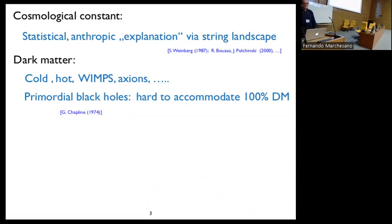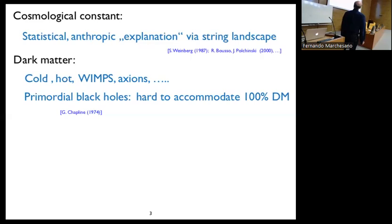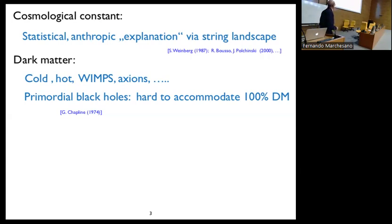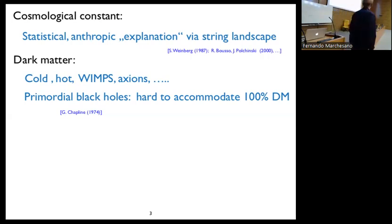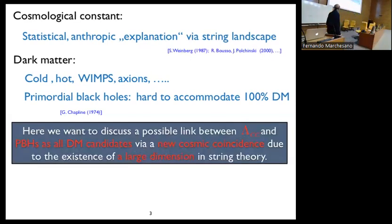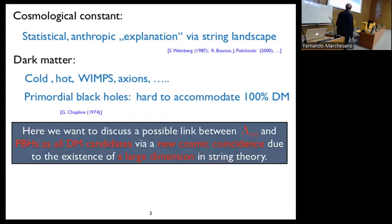For several years, people thought that a good explanation for the cosmological constant is a statistical anthropic explanation via the string landscape. And this might be the case for dark matter too — there are many scenarios like cold dark matter, hot dark matter, WIMPs, axions. It was also suggested some time ago that black holes could serve as dark matter particles, but it was also pointed out that it is very hard to accommodate 100% of the dark matter needed. So here we want to discuss a possible link between the cosmological constant and primordial black holes as dark matter candidates, via a new kind of cosmic coincidence.